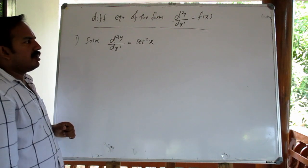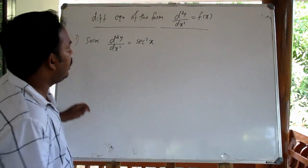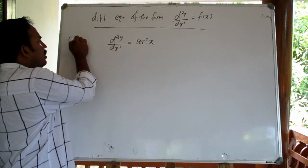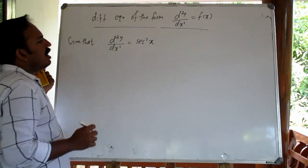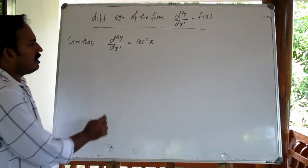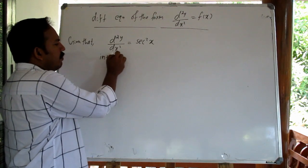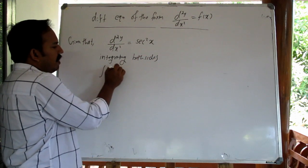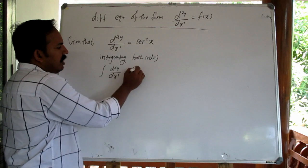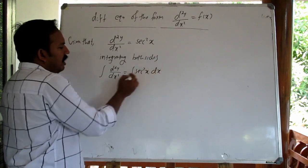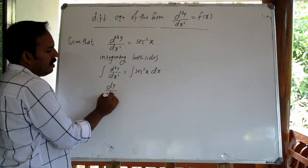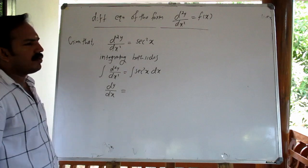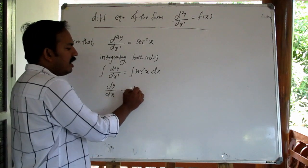So the question is: d squared y by dx squared equal to cos squared x. Given that, we integrate both sides — integral of d squared y by dx squared equal to integral of cos squared x. Then taking dy by dx and integrating again.